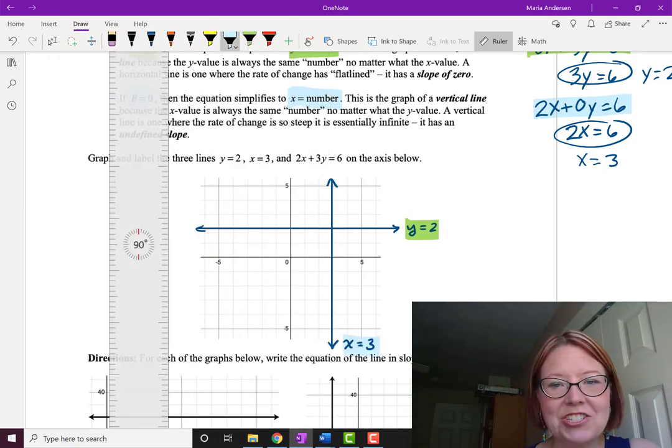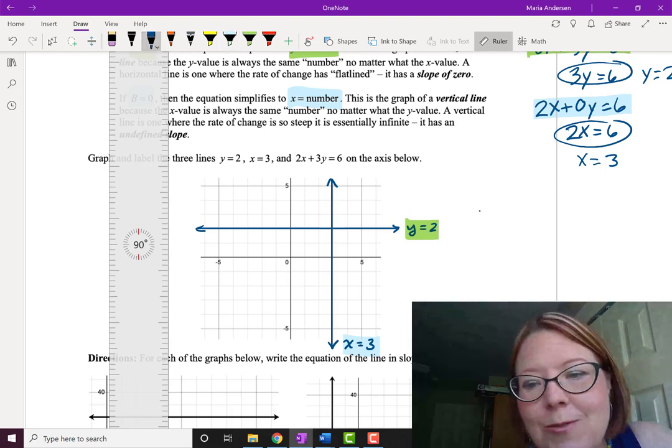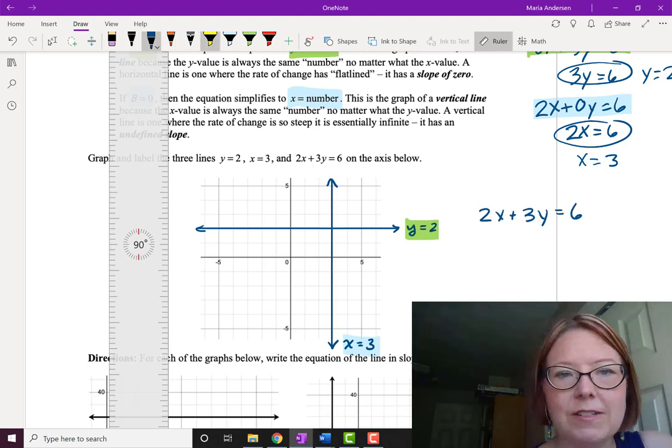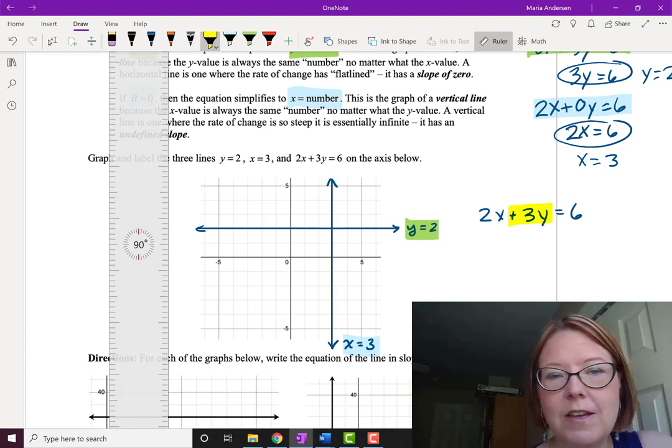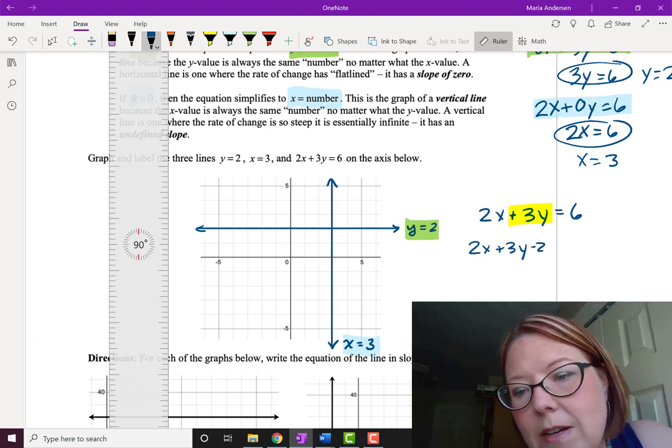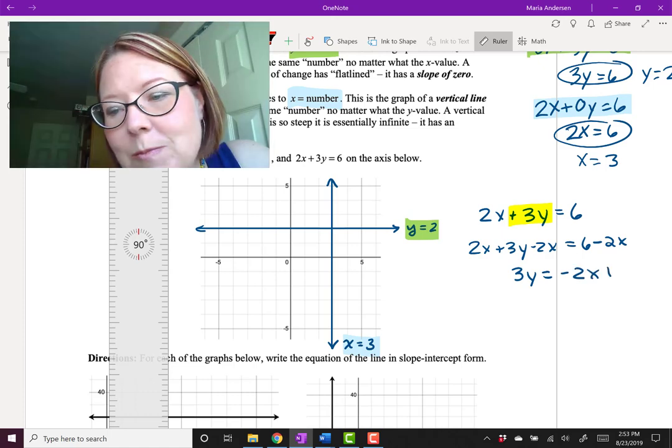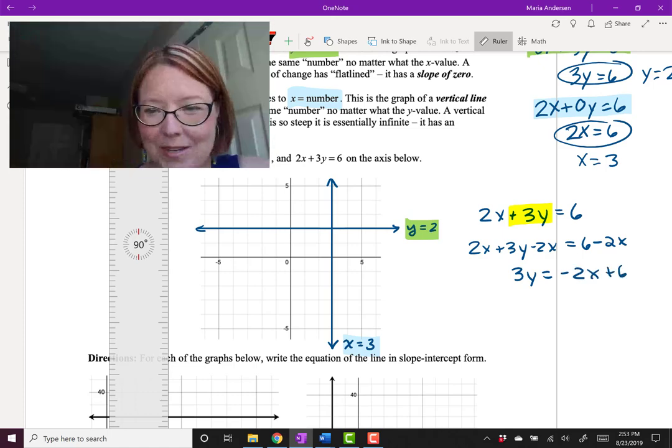And then finally we're going to draw the line 2x plus 3y equals 6. Now let's actually use that slope-intercept form to do this. It'll be good practice for us. So let's start with 2x plus 3y equals 6. We're going to solve for y, so we want to get the 3y by itself. We're going to subtract 2x from both sides. So 2x plus 3y minus 2x equals 6 minus 2x. That leaves us with 3y equals, and let me just rearrange these two terms, negative 2x plus 6.